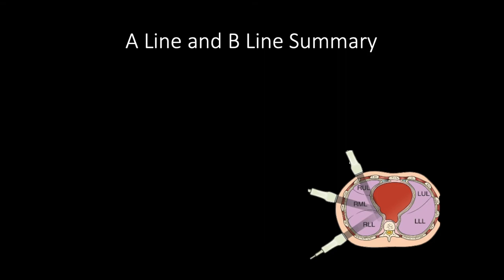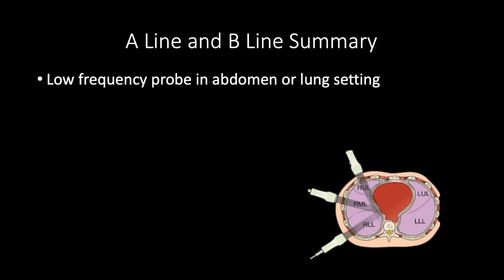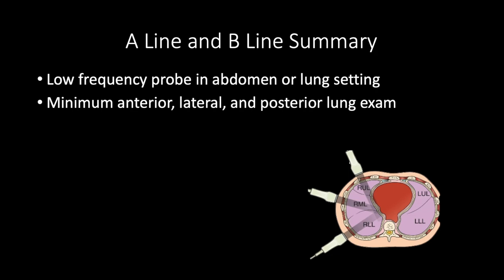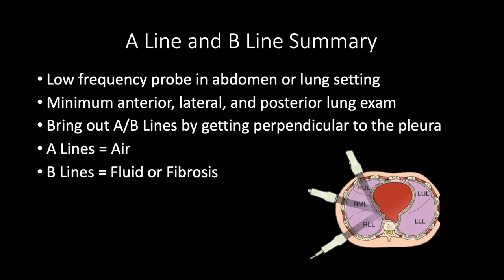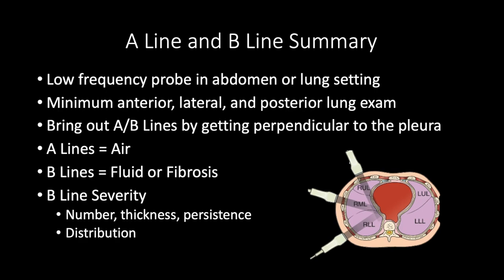Let's summarize. To find A-lines and B-lines, start with a low frequency probe in abdominal or lung setting. At minimum, look at anterior, lateral, and posterior lung zones on both sides. Bring out A-lines and B-lines by getting perpendicular to the pleura — that's what causes these artifacts to jump off the screen. A-lines are air and normal; B-lines are bad, commonly fluid or fibrosis. Always think about B-line severity: the number, how thick they are, how persistent through the respiratory cycle, and their distribution — bilateral versus asymmetric, one zone versus many. That concludes part one — when you're ready, move on to part two at proceduralist.org.